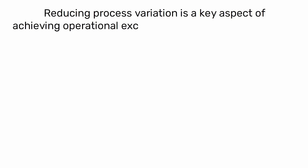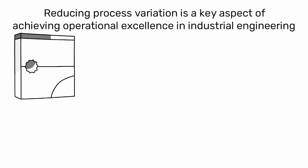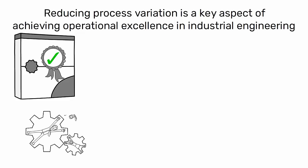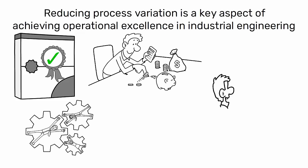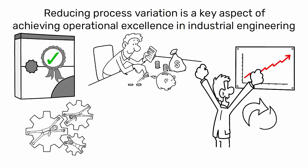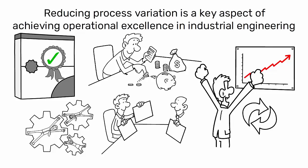In conclusion, reducing process variation is a key aspect of achieving operational excellence in industrial engineering. It leads to better quality, efficiency, cost-effectiveness, continuous improvement, and decision-making.